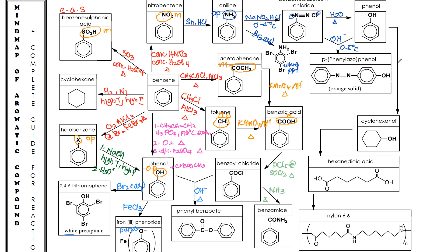For phenol to become cyclohexanol, you use hydrogenation — hydrogen with nickel at high temperature and high pressure — same as how benzene becomes cyclohexane. Cyclohexanol then reacts with concentrated nitric acid (HNO₃) under reflux to form hexanedioic acid. Hexanedioic acid then reacts with a diamine to form nylon.